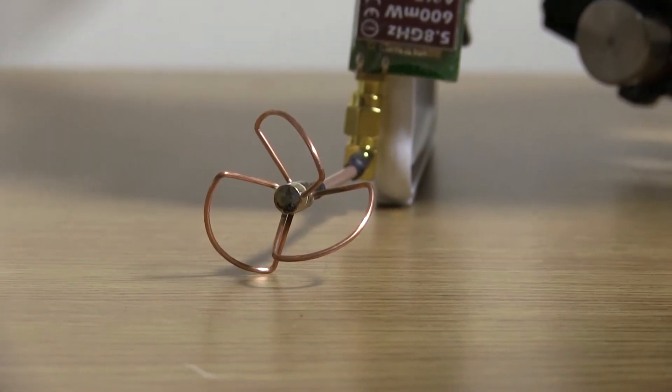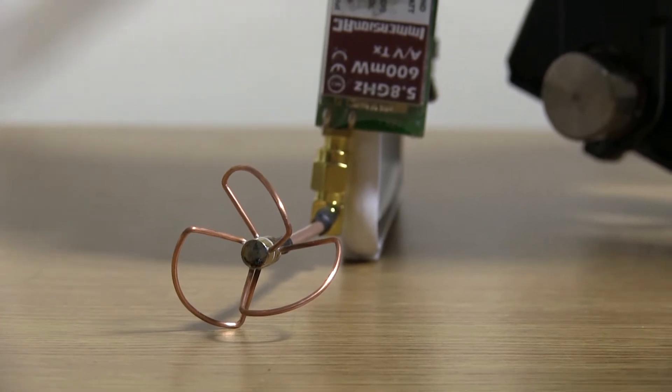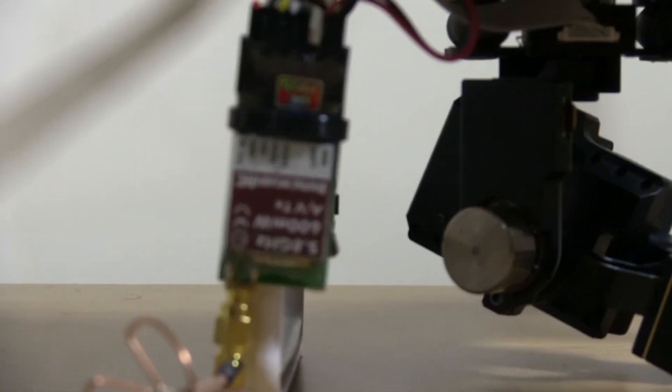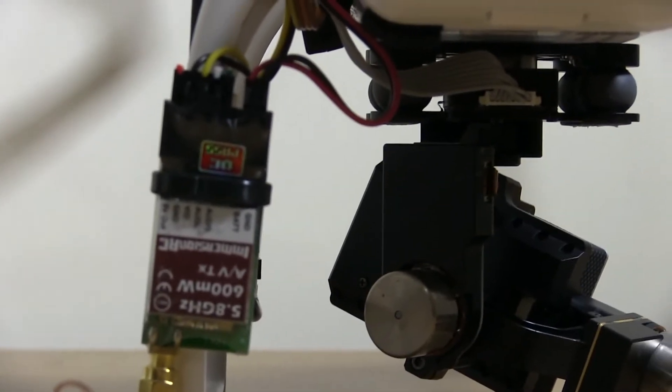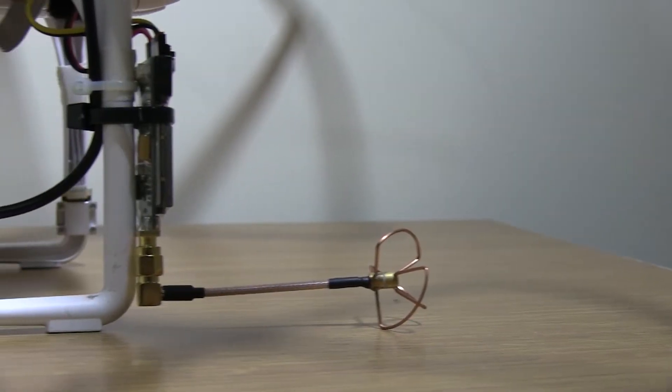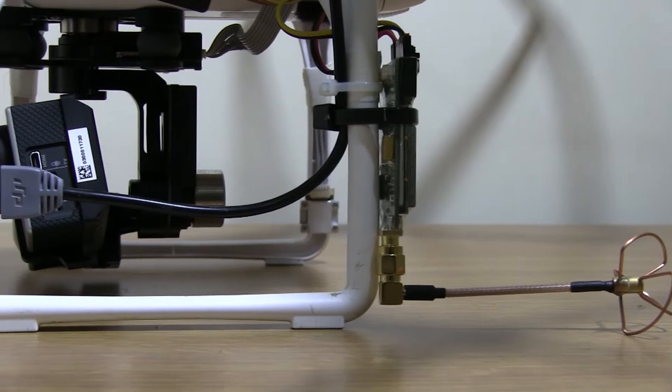On the back leg you can see that I've got an ImmersionRC Fatshark 5.8 gigahertz transmitter with a circular polarized antenna, and that basically just gives me a live feedback from my GoPro back to my monitor plus some of the stats.